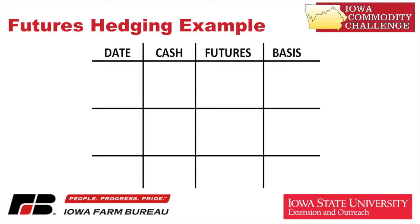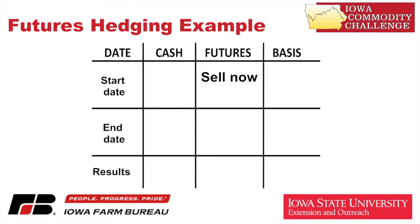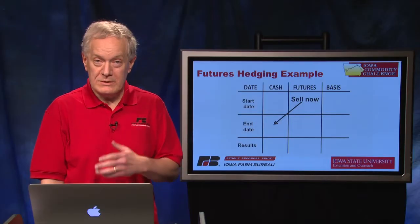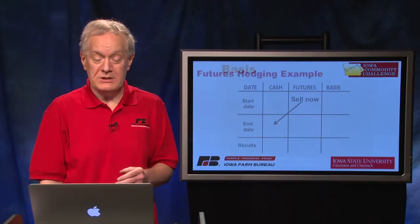This is one of my favorite diagrams — it shows the markets that need to be tracked in a futures transaction as a hedge. We've got cash, futures, and basis that we can track from the beginning date all the way to the end date and the results. In a sold hedge, we're going to sell now at the beginning date for something we're going to do later in the cash market anyway.